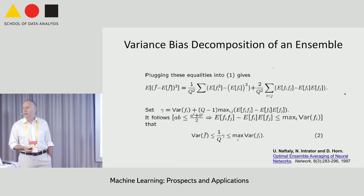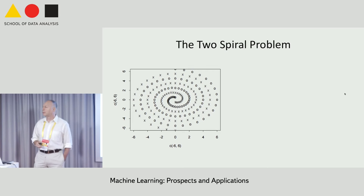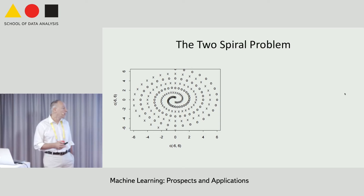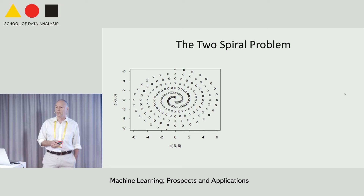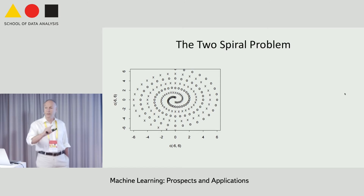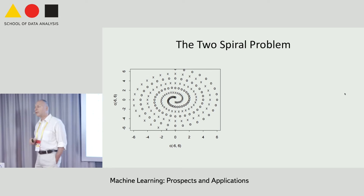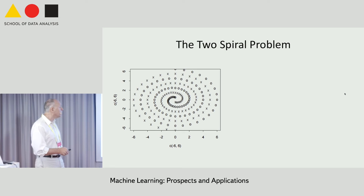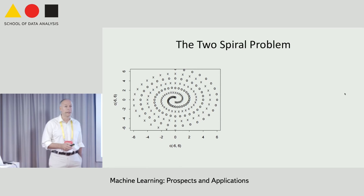I'm going to demonstrate this on a problem that has been studied quite a bit: the two-spiral problem. This is highly non-linear. There were many papers written indicating that backpropagation cannot solve this problem. The task is to separate between the x's and the zeros — to create the non-linear boundary separating between them. Because the radius is changing, this becomes a highly non-linear case, both in R-theta and in Euclidean space as well. The question was how to do it, and it's a very non-trivial problem.